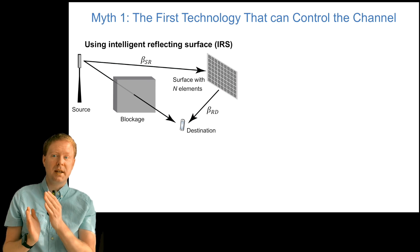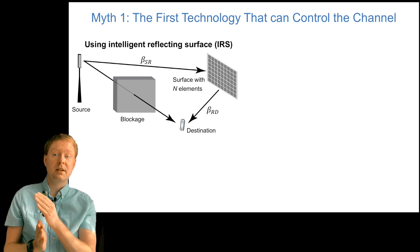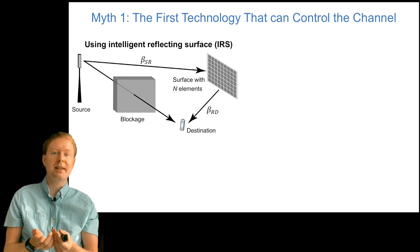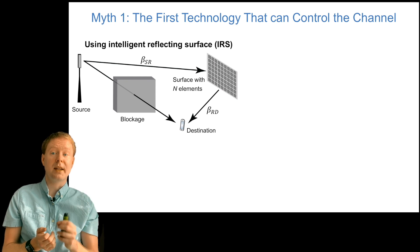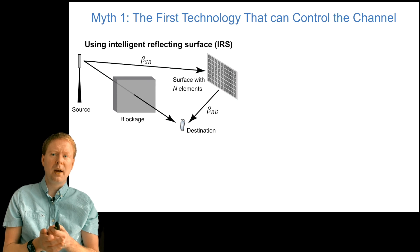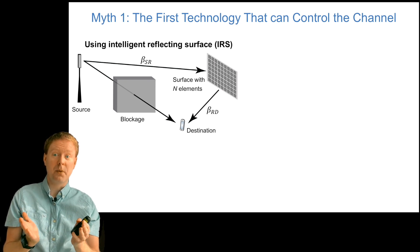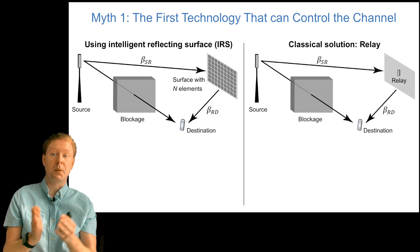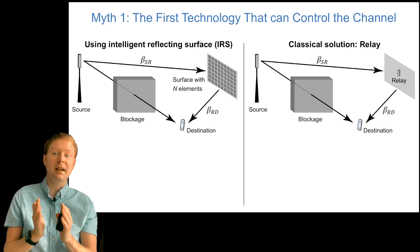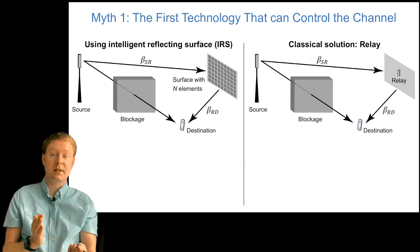The first myth is that this is the first technology to control the channel. Using this intelligent reflecting surface, you see here we send a signal from a source to a destination, and it goes via this surface containing n small reflecting elements, which we can control each of them. We have beta-sr as the path loss between the source and the surface, and beta-rd from the surface to the destination. Assume that this blockage is so severe that we can't even count on the source to the destination. Have you seen a setup like this before? This is actually a classical relaying setup, where we would consider exactly the same scenario, except that we don't have a surface with n reconfigurable elements. We have a relay. Say that we have a decode and forward relay that obtains the signal, and then it retransmits it later to the destination.